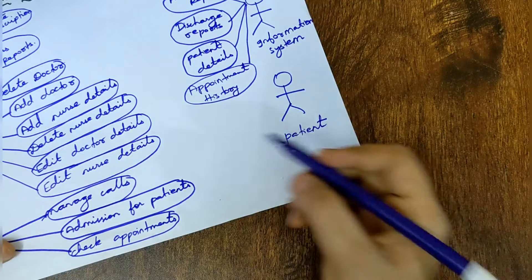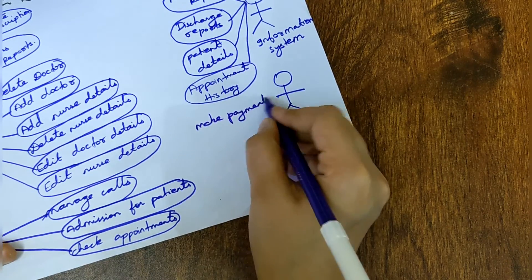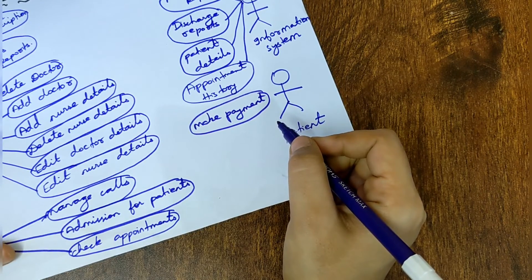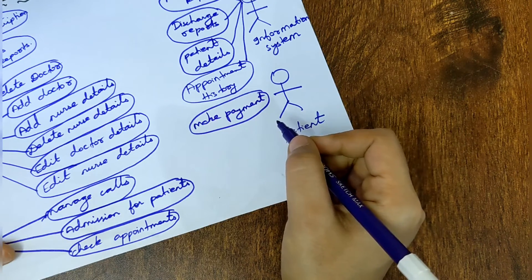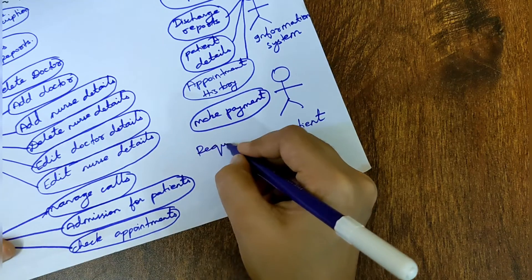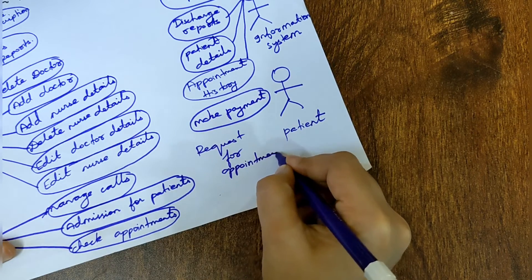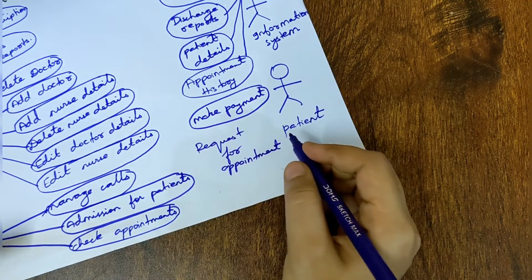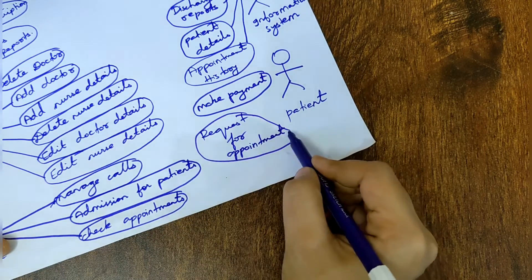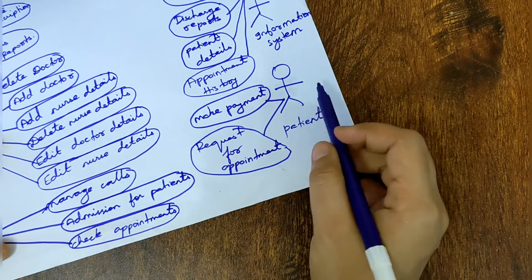The last actor is patient. The use cases for patient are: 'make payment' — after visiting the hospital, the patient pays the doctor fee; and 'request for appointment' — the patient makes a request for an appointment by calling the receptionist. I join these two use cases to the patient actor using connectors.